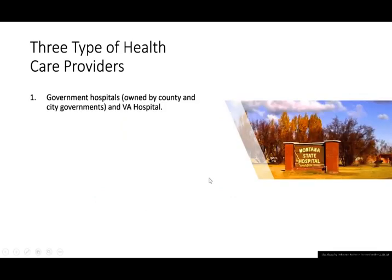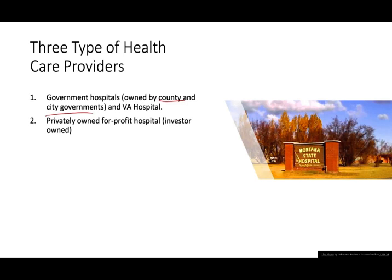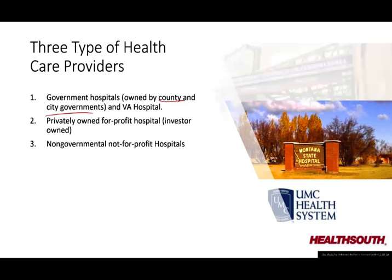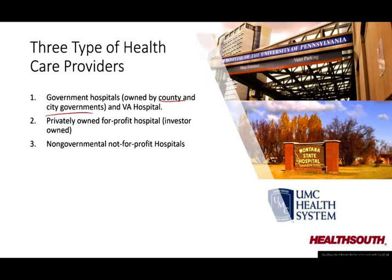Today we're going to talk about financial statements. We have to understand that we have three types of healthcare providers. We have government-owned — by county, city government, or VA hospital. We have privately-owned hospitals owned by investors; for example, Health South is a private hospital. And we have non-governmental, non-profit hospitals — usually religious, but not always, like University of Pennsylvania in Philadelphia.